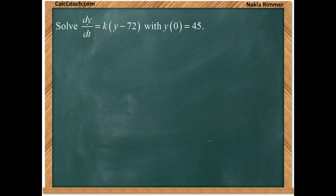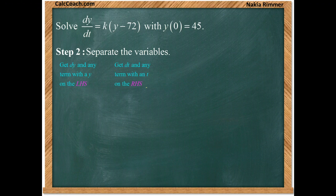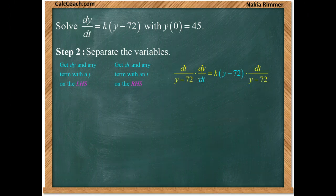We have dy/dt = K(Y - 72) and Y(0) = 45. Let's separate the variables. Leave the K where it's at. We want to get the Y and dy on the left hand side and the T and dt on the right hand side. So we're going to multiply by dt over (Y - 72). What that does is clear out the dt on the left hand side and the Y minus 72 from the right hand side, giving you exactly the separation you need.